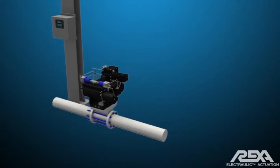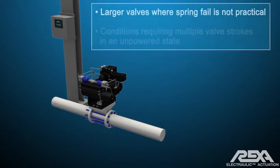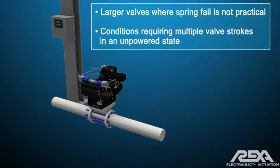Accumulator fail equipment is used for larger valves where the required torque or thrust is so great that a spring is not practical, and for conditions requiring multiple valve strokes in an unpowered state.